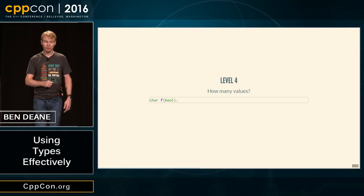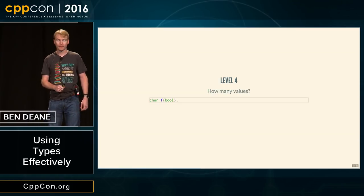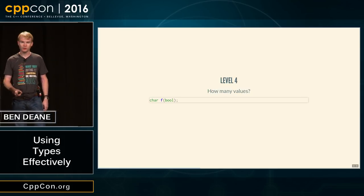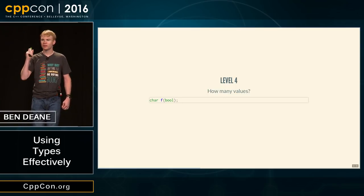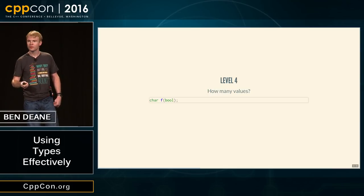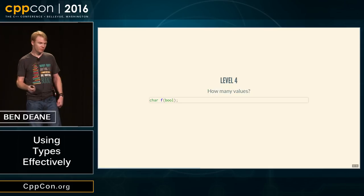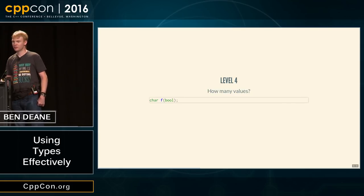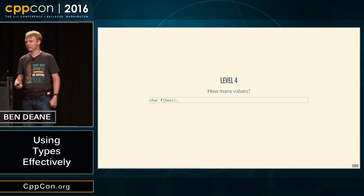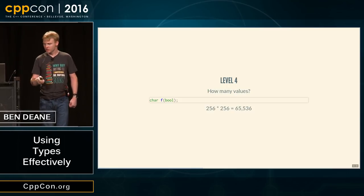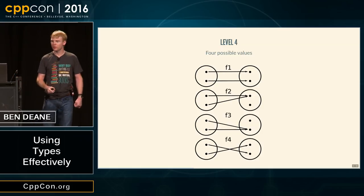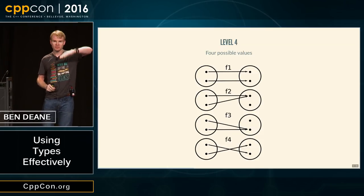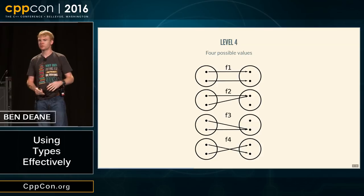Now, slightly harder: how many ways can we write f from bool to char? 256 squared is the correct answer — 64K. Because we can draw the first arrow 256 ways and independently draw the second arrow another 256 ways, and we multiply them together.